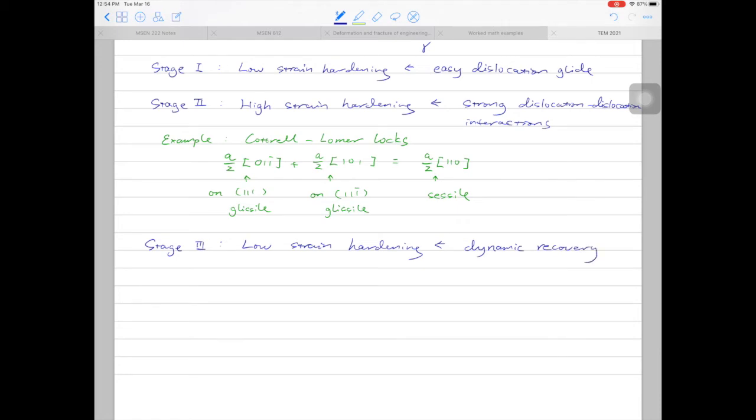At the microstructure and dislocation level, what's going to happen is those dislocations will rearrange themselves to form sub-grain boundaries or dislocation arrays.